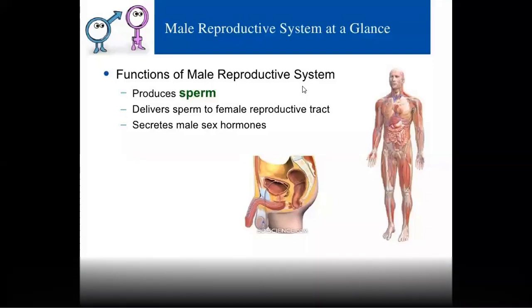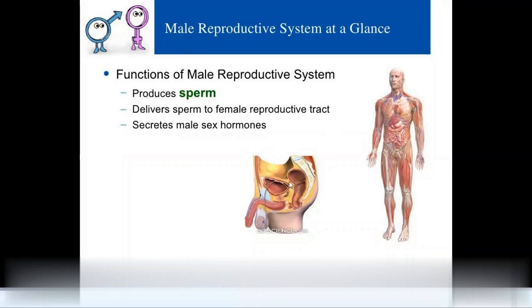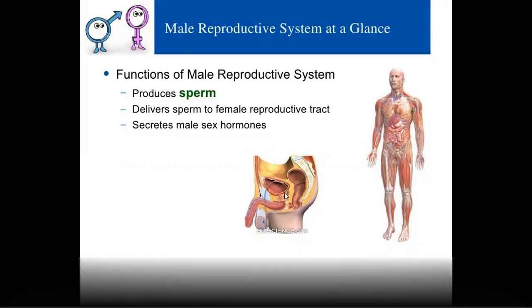Hello, next topic: male reproductive system. Male reproductive system includes internal genitalia and external genitalia.